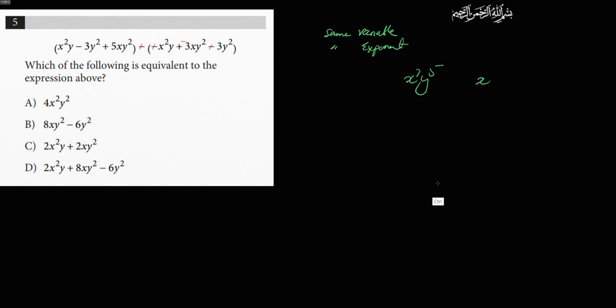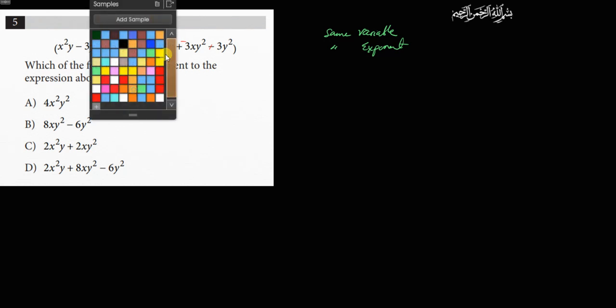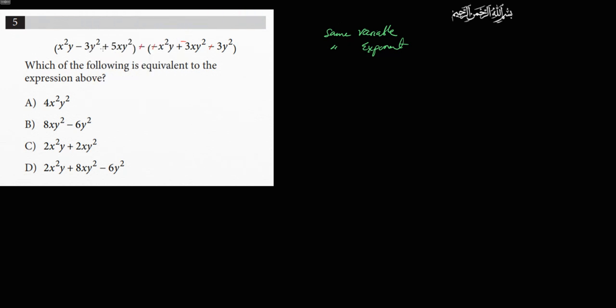You have to combine the like terms. Well, if you don't know what like terms are, how are you going to combine them, right? Like terms are terms that have the same variable, same exponent. The way you do this without getting confused and messing it up is you do it very carefully methodically. It's easy peasy.